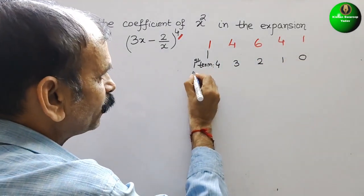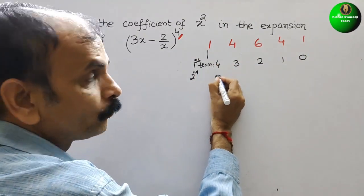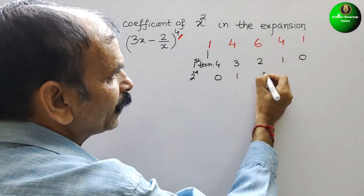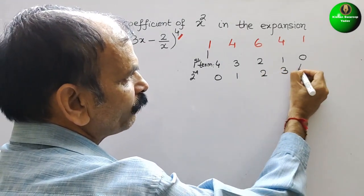For the second term, here the power is 0, here it will come 1, here it will come 2, here it will come 3, here it will come 4.